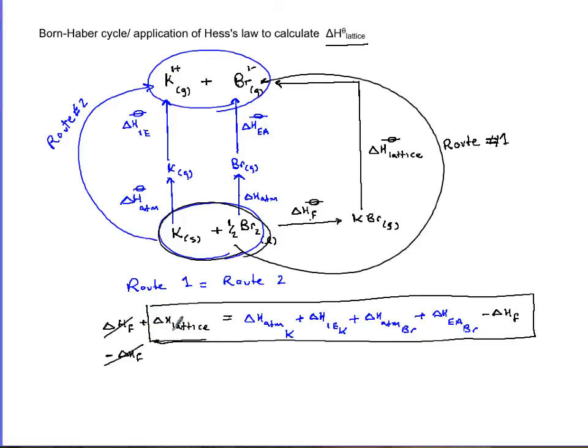So this is Hess's law, except we call it Born-Haber after those two scientists, and it becomes handy in order to calculate experimental value of delta H lattice. In the next slide, I'm going to plug in some values and tell you where you find those values from.